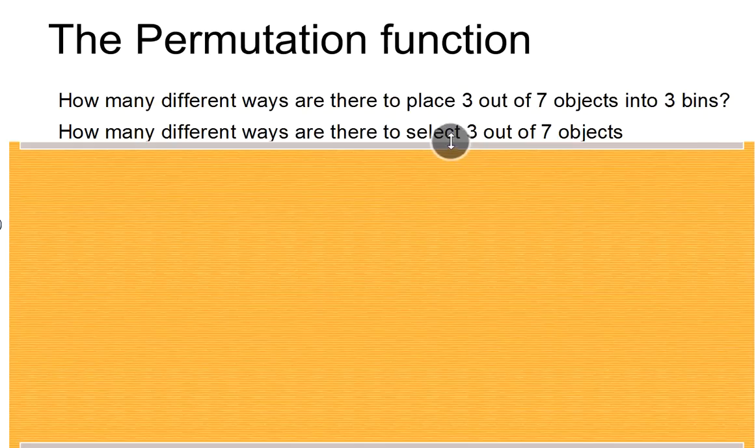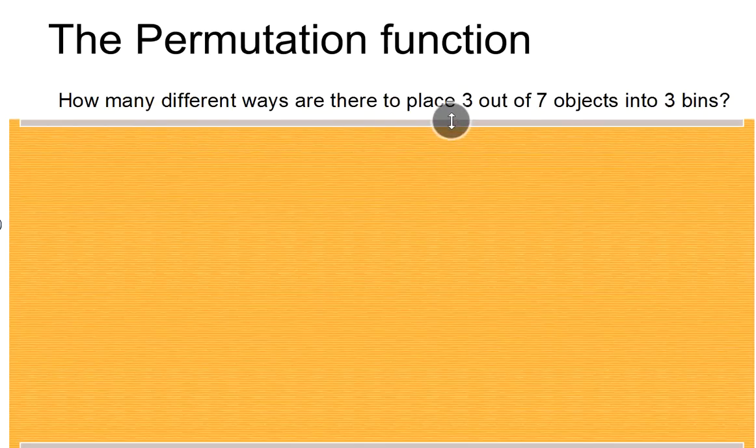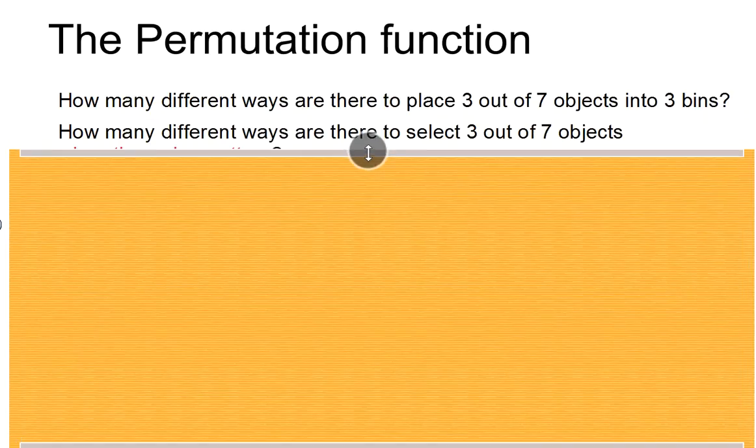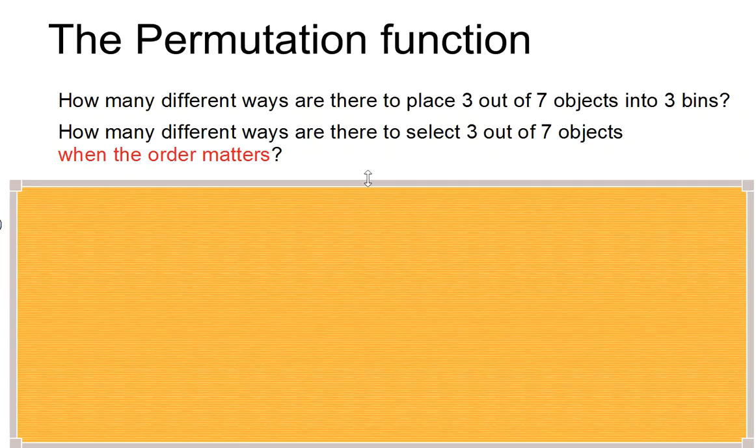Now that we've done the factorial function, we're ready to talk about the permutation function. The permutation function answers a question that can be put in one of two ways. One is: how many different ways are there to place 3 out of 7 objects into 3 bins? Or, slightly differently: how many different ways are there to select 3 out of 7 objects when the order matters?